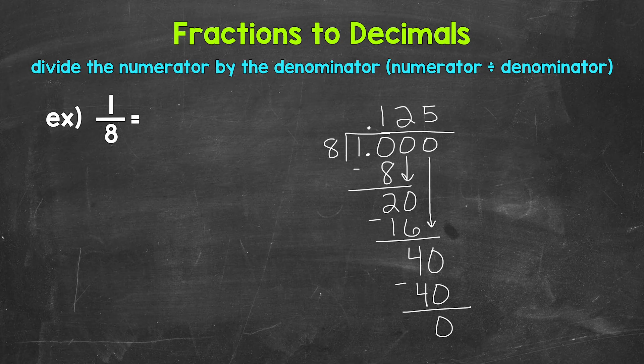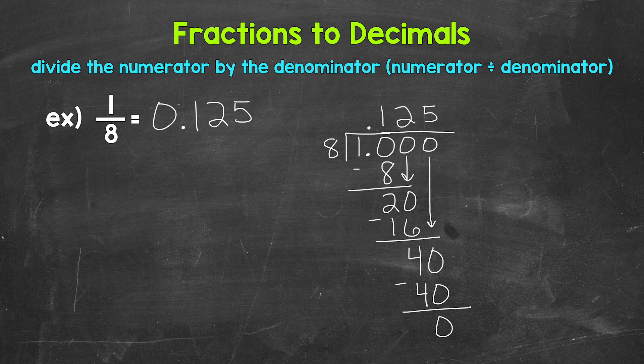1/8 equals 125 thousandths. So let's write this: 1/8 equals 0.125. There's how to convert 1/8 to a decimal.